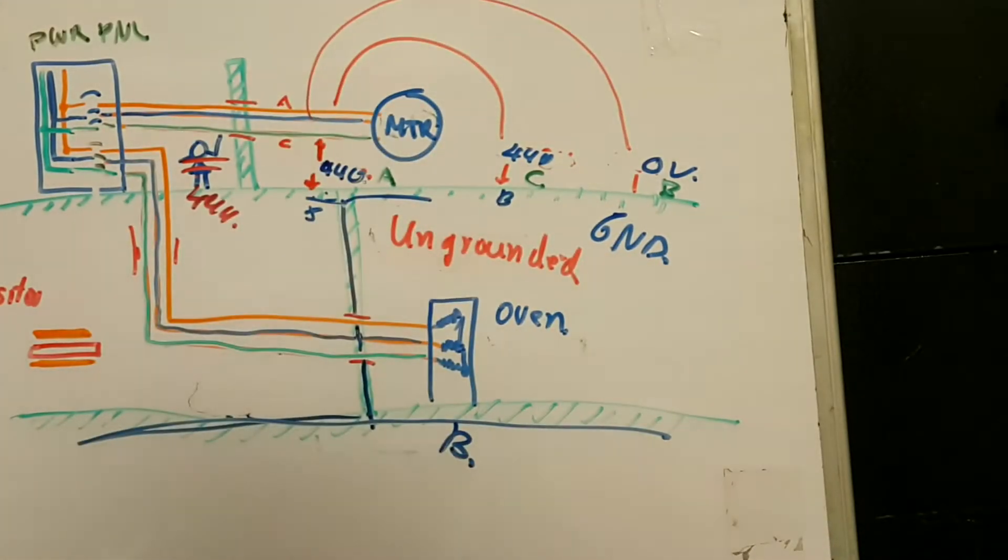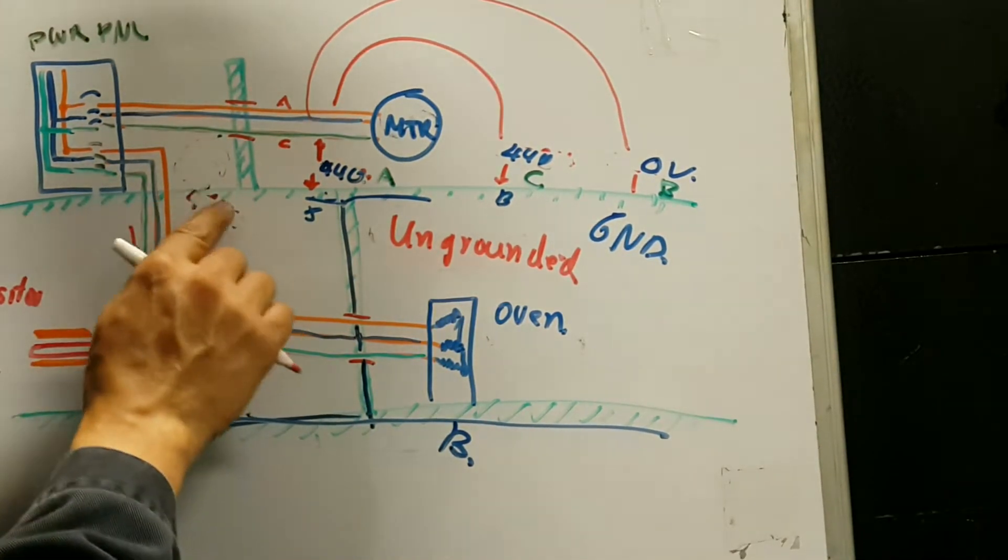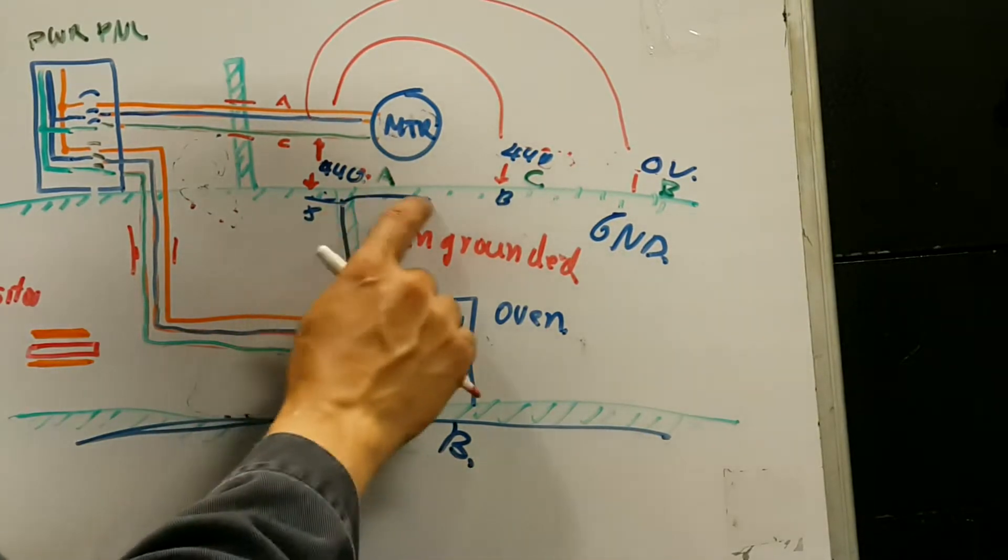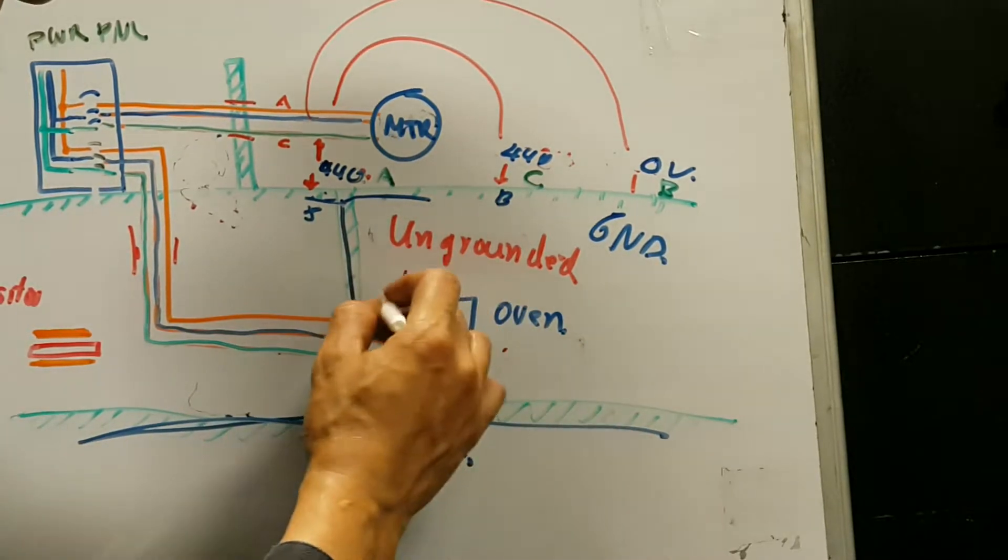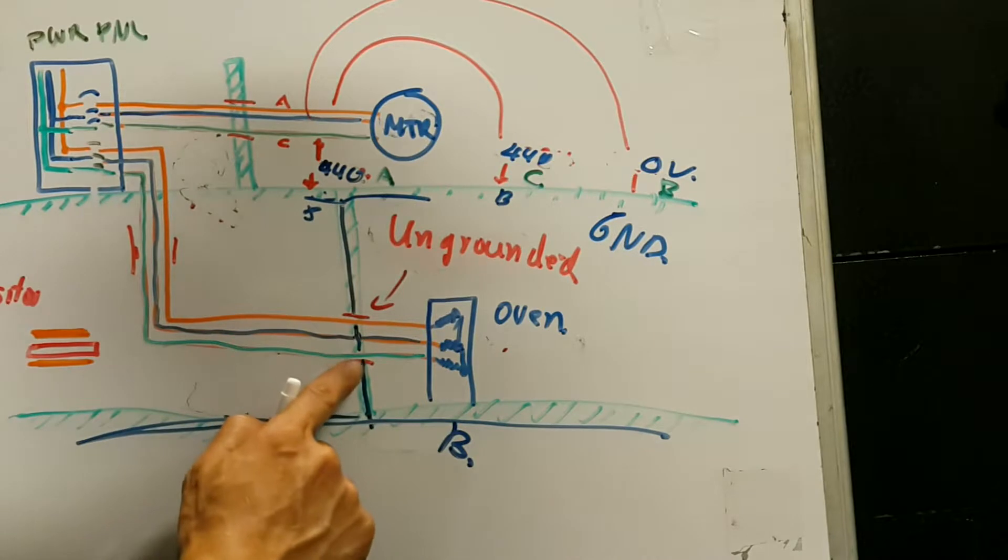But now, that's not really what we're concerned for grounds, because most people don't touch those wires. What we're concerned is that now the ship is at B potential. So this oven over here, this cable is the one that's grounded on B potential.